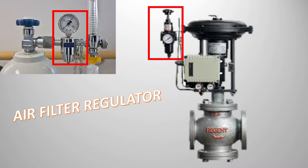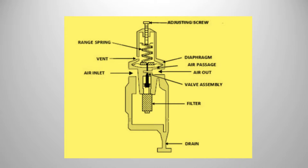Now we will be discussing how an air filter regulator works and what are the different parts of an air filter regulator. In this image you can see the different components — this is the general arrangement of an air filter regulator. Starting from the bottom, there is a drain option used to drain dust and moisture which settles at the bottom. Next we have a mesh or filter with different micron settings that filters the air getting into the air filter regulator. There is also an air inlet passage and an air outlet passage.